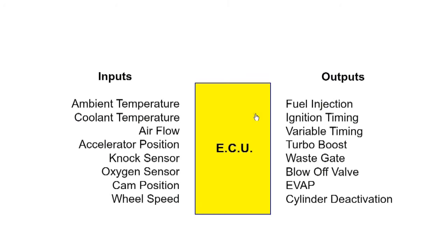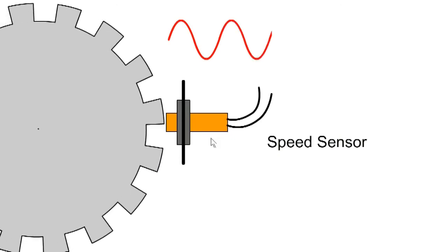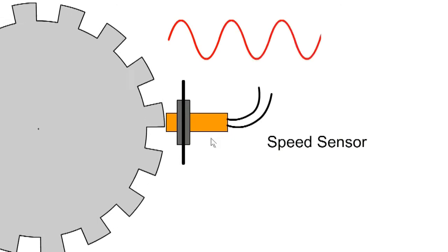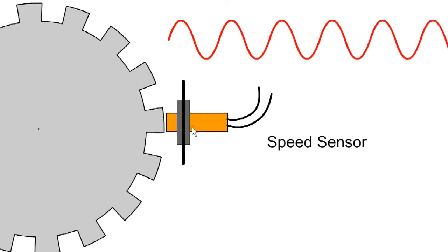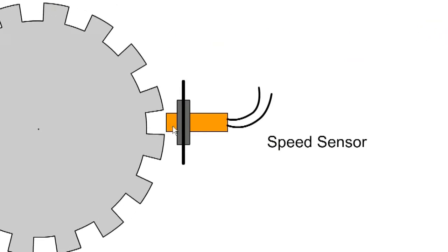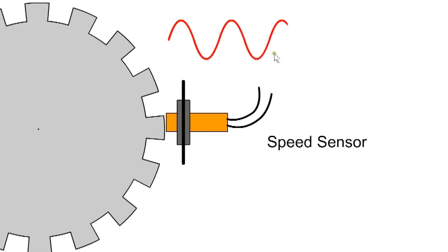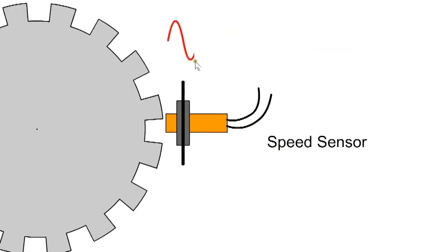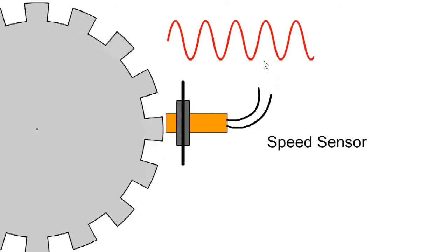First, we look at the sensors which input information to the ECU. Speed pickups are based on inductive or magnetic speed sensors. When a toothed ferrous wheel moves past the magnetic sensor, it excites a voltage in the pickup coil, producing an electrical analog waveform. The frequency of this waveform is proportional to the speed of rotation. They are used for crankshaft, camshaft, and wheel speed sensors.